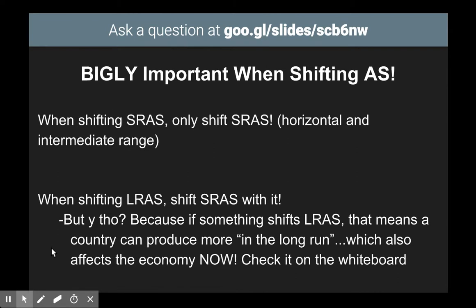We'll come back to this in just a minute with some shifting examples. When shifting aggregate supply, if you are given a SERAS shifter, you only shift SERAS — that horizontal and intermediate range shape. But when you shift LURAS, it gets a little more complex, so I'll save that for a bit later.